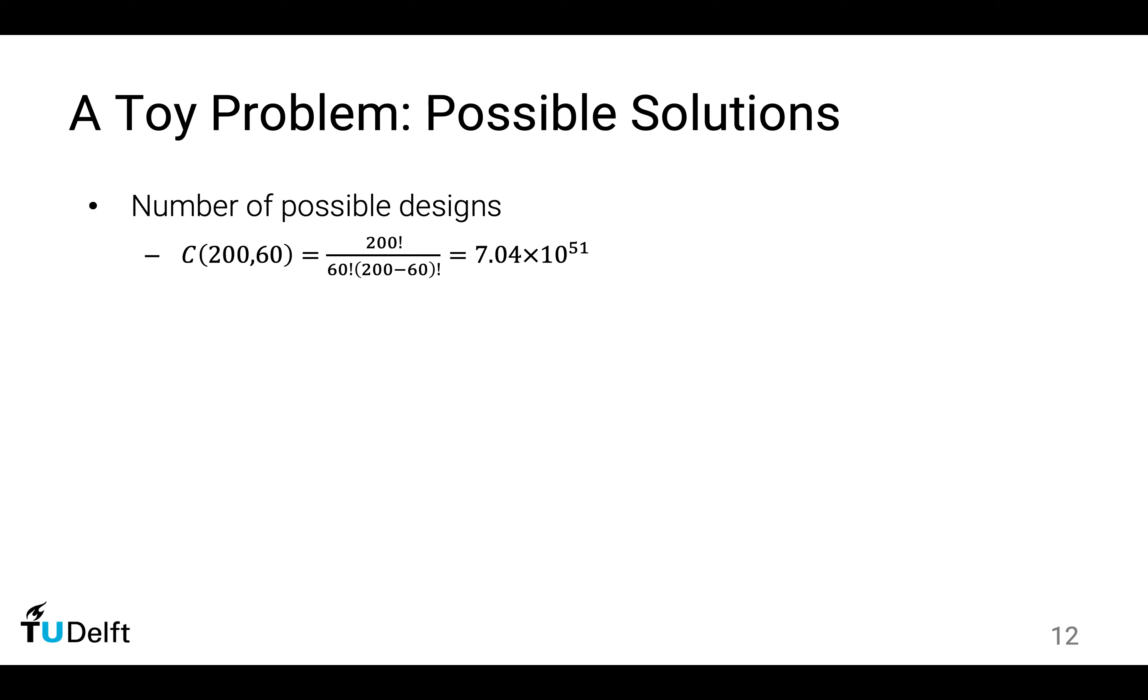In China, when we talk about a big number, a countless number, we say it's just like the stars in the universe. The stars in the universe, by estimation, the number is about 10 to the power of 24, which is far less than the possibilities here.